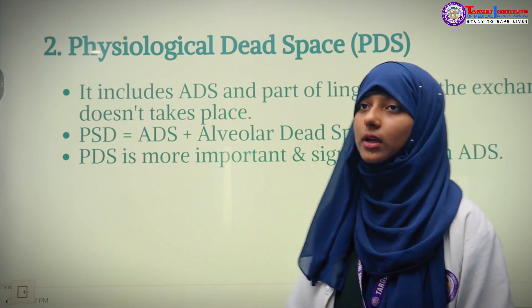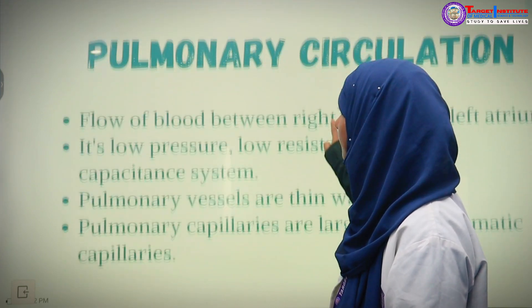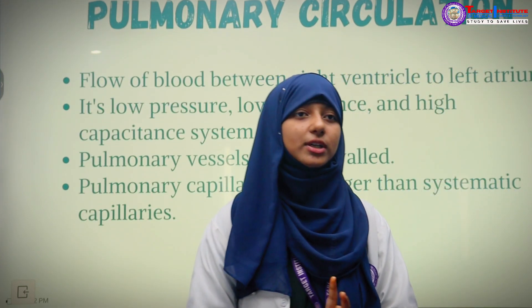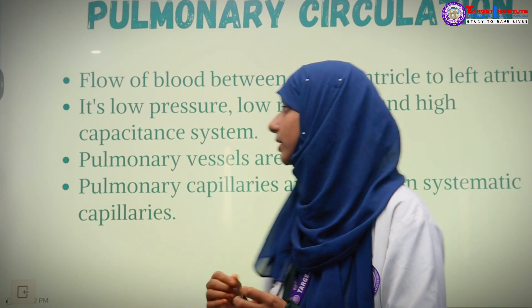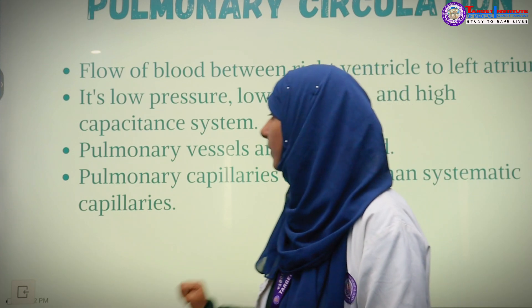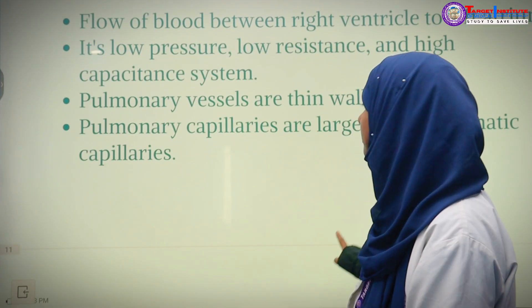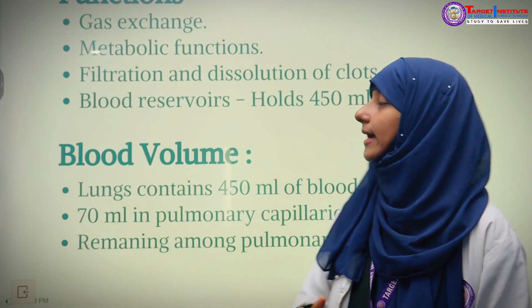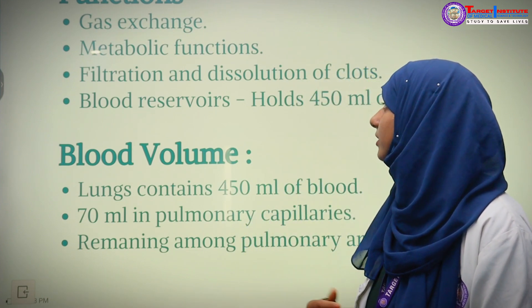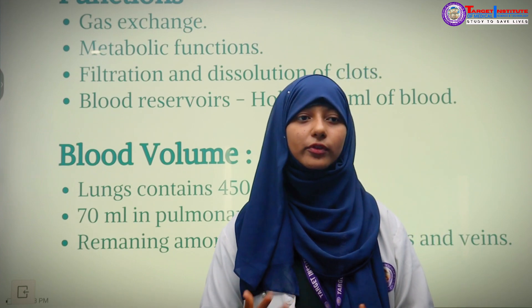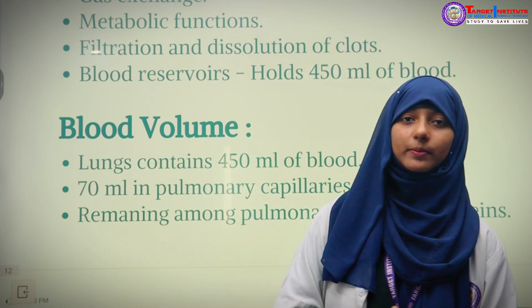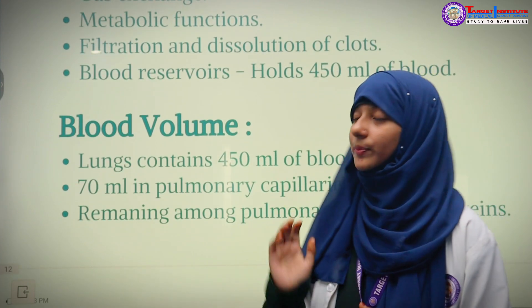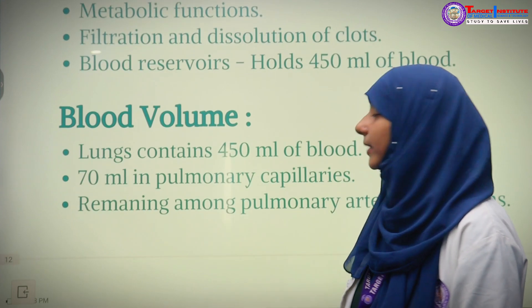Physiological dead space is more important and significant than anatomical dead space. Pulmonary circulation is the flow of blood from the lungs to the heart — from the right ventricle to the right atrium. It is a low pressure, low resistance, and highly capacitive system. Pulmonary capillaries are larger than systemic capillaries. Its functions include gas exchange, metabolic functions, filtration and dissolution of clots, and serving as a blood reservoir holding 450 ml of blood. Our lungs contain 450 ml of blood; 70 ml is in the pulmonary capillaries and the remainder is in the pulmonary veins and arteries.